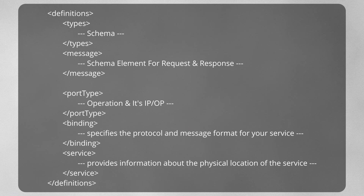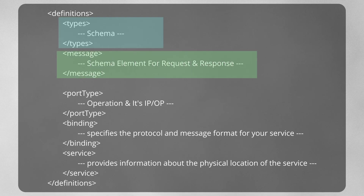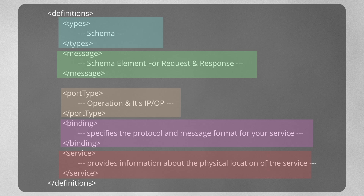The definition is the root element and it contains: types, which has the schema location; message, which tells the request and response elements within the schema; port type, which describes how many operations that WSDL has and each operation's input and output elements; binding, which binds operations to different SOAP styles; and service, which defines the location of the particular service — what port it is deployed to and how we can access it. In Oracle SOA there is one more element named partner link that also gets added to the WSDL, but in general a WSDL will have these five main elements.